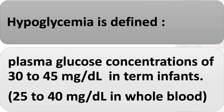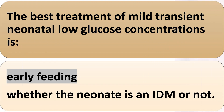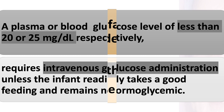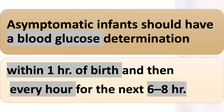Hypoglycemia is defined as plasma glucose concentrations of 30–45 mg/dL in term infants, or 25–40 mg/dL in whole blood. The best treatment of mild transient neonatal low glucose concentrations is early feeding. A plasma or blood glucose level of less than 20 or 25 mg/dL respectively requires intravenous glucose administration unless the infant readily takes a good feeding and remains normoglycemic. Asymptomatic infants should have a blood glucose determination within 1 hour of birth.